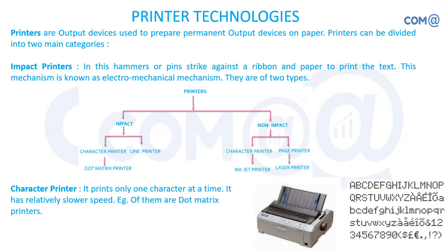We can split printers into two major categories: one is an impact printer and the other is a non-impact printer. In impact printers we have different types — one is a character printer and the other is a line printer. The differentiation is based on the method of whether the printer is touching the paper or not. Based on that, we say it is an impact printer or a non-impact printer.